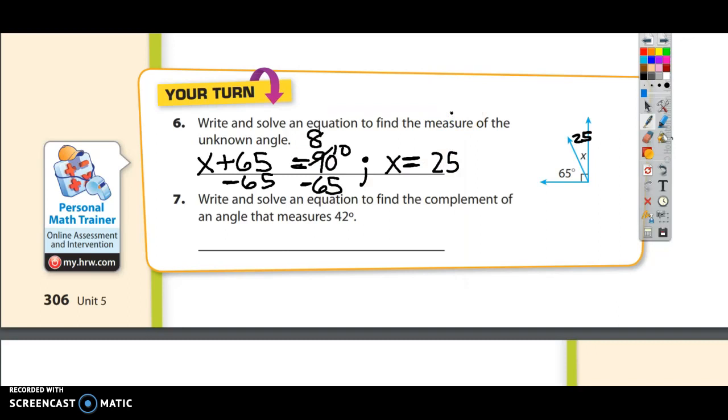We had to do two things here. We had to write the equation, and then we had to solve it. Number 7 says write and solve an equation to find the complement of an angle that measures 42 degrees. The word complement here is the key. Complement is short for complementary.